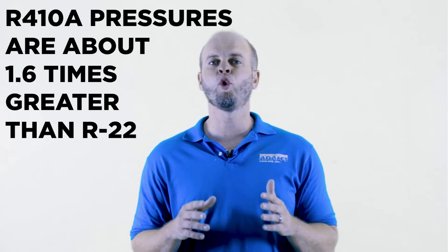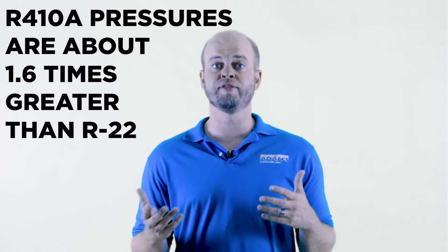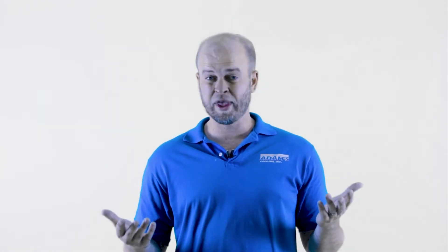R410A actually has pressures that are 1.6 times greater than the old refrigerant R22, which is where we have a lot of evaporator coils breaking down because they make it with a thin metal, and then the pressures are much greater, but that's another story.